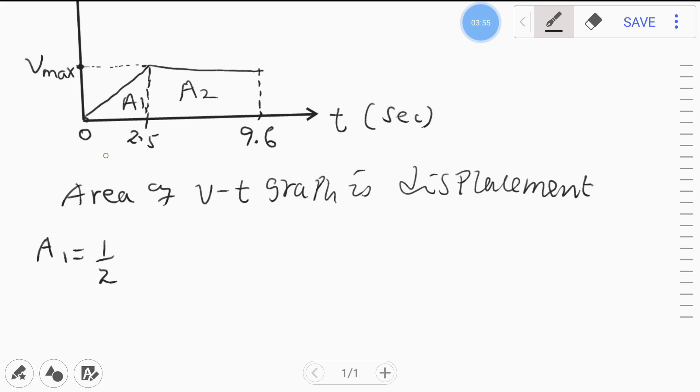What's area 1? Since it is a triangle, area 1 is half base times height. The base is 2.5 and the height is v_max, which equals 1.25 v_max.